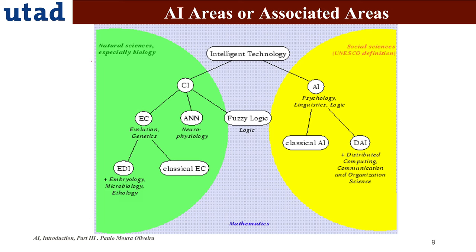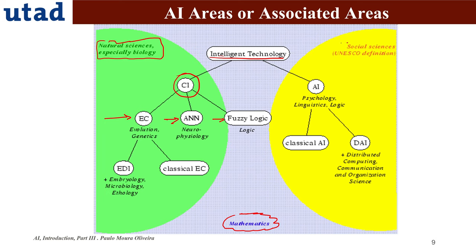This is another typification. At the top we have intelligent technology, and to the left we have computational intelligence, covering evolutionary computation, artificial neural networks, and fuzzy logic. Fuzzy logic sits somewhat in between, in a kind of overlap with mathematics. Mathematics connects the natural sciences — especially biology — to the social sciences, according to the UNESCO definition. To the right, you have classical AI and also distributed artificial intelligence.